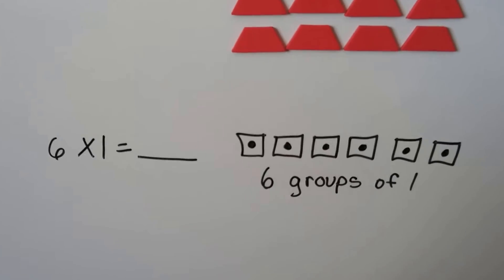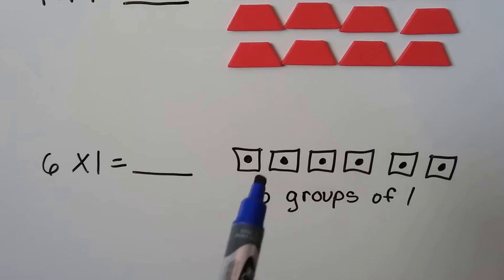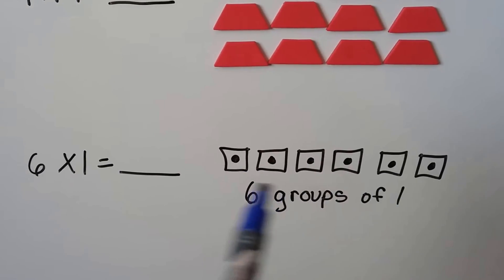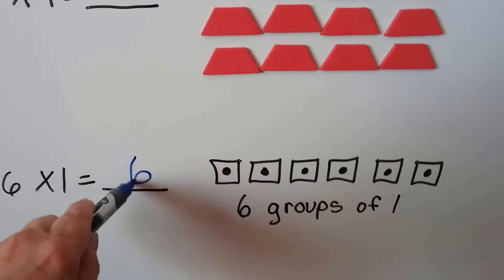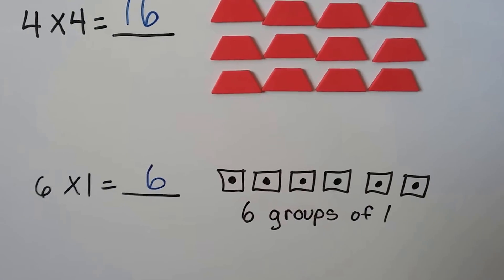Here we have 6 times 1. That means we have 6 groups of 1. So we have 6: 1, 2, 3, 4, 5, 6.